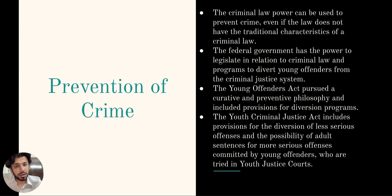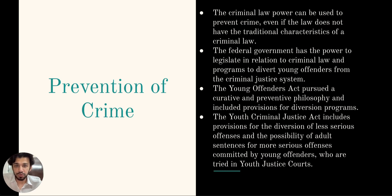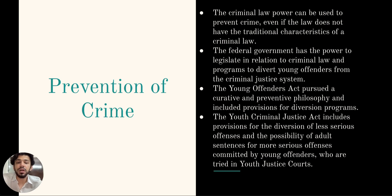The criminal law power can be used to prevent crime even if the law does not have traditional characteristics of a criminal law. For example, binding someone to keep the peace or controlling gun possession are both examples of laws that aim to prevent crime. The federal government has the power to legislate in relation to criminal law, including laws aimed at preventing crime and programs to divert young offenders from the criminal justice system. The Young Offenders Act and the Youth Criminal Justice Act are two examples of federal laws aimed at preventing crime and rehabilitation of young offenders.